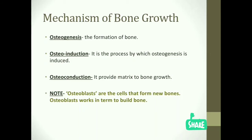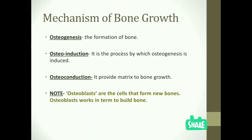Next, the mechanism of bone growth. There are three categories: osteogenesis, osteoinduction, and osteoconduction. Osteogenesis is the process of formation of bone. Osteoinduction is the process by which osteogenesis is induced or initiated. Osteoconduction provides the matrix to the bone for growth. A key terminology note — osteoblasts are the cells that form new bone, working in a team to build bone.